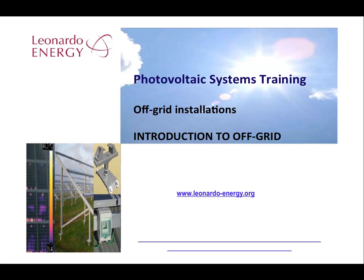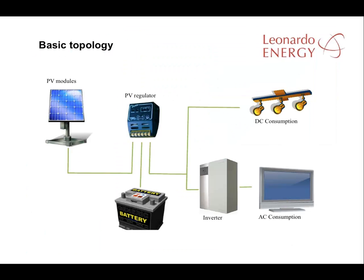While there are many similarities between grid-connected and off-grid installations, there are many differences that need to be taken into account. This basic diagram shows the main elements in an off-grid facility. The PV modules are the same as in grid-connected facilities, but there are two new devices: a PV regulator and a battery. There is also a special type of inverter and two different types of consumption — direct current and alternating current.